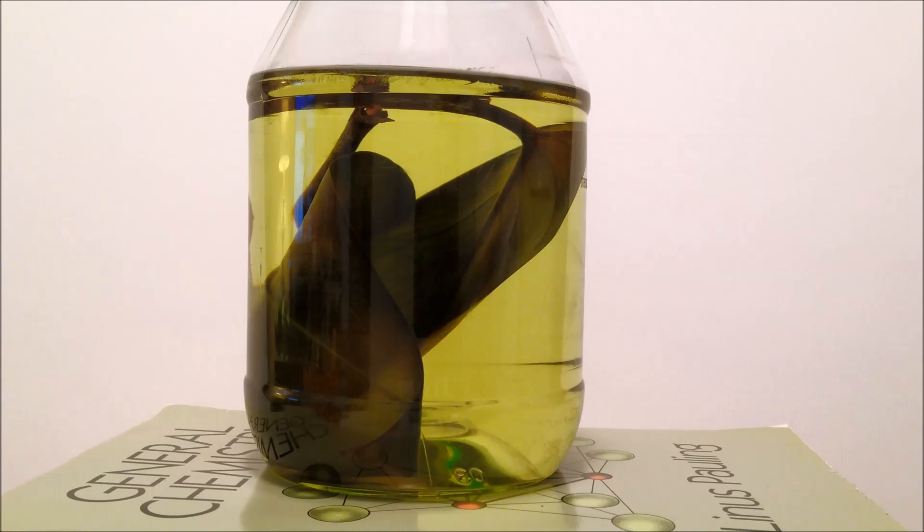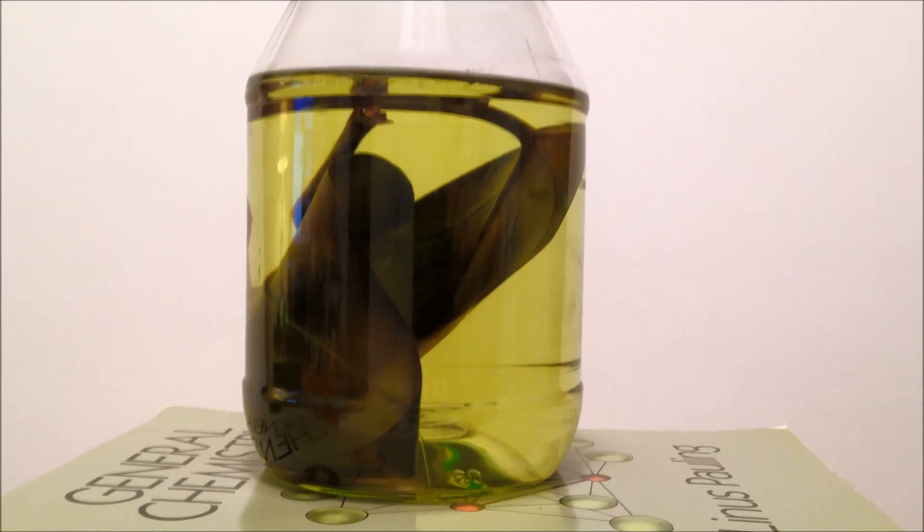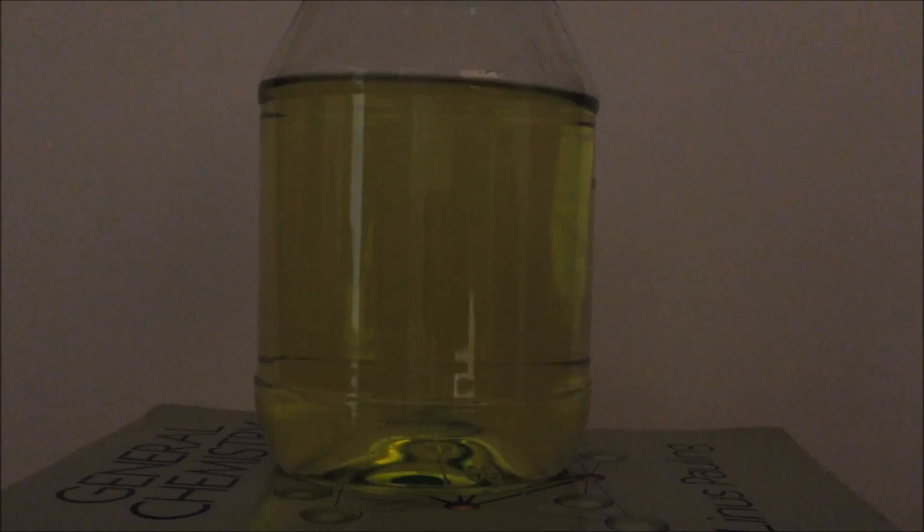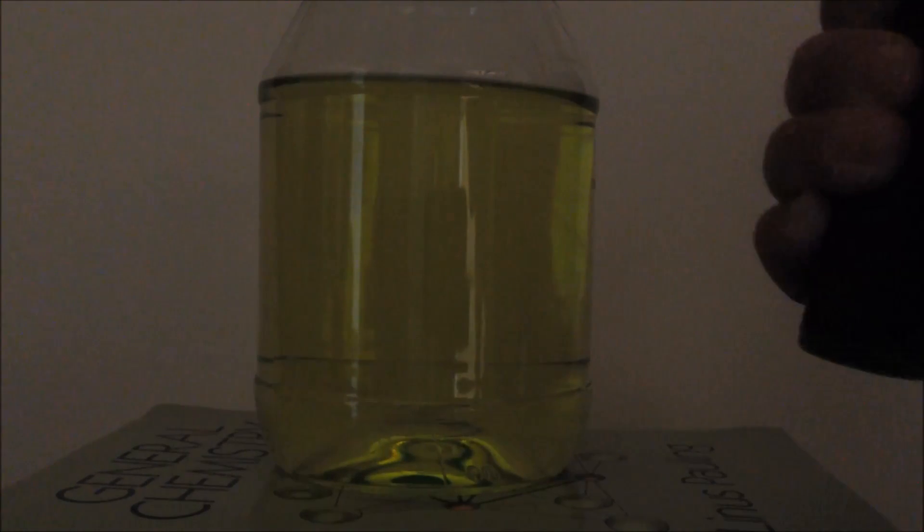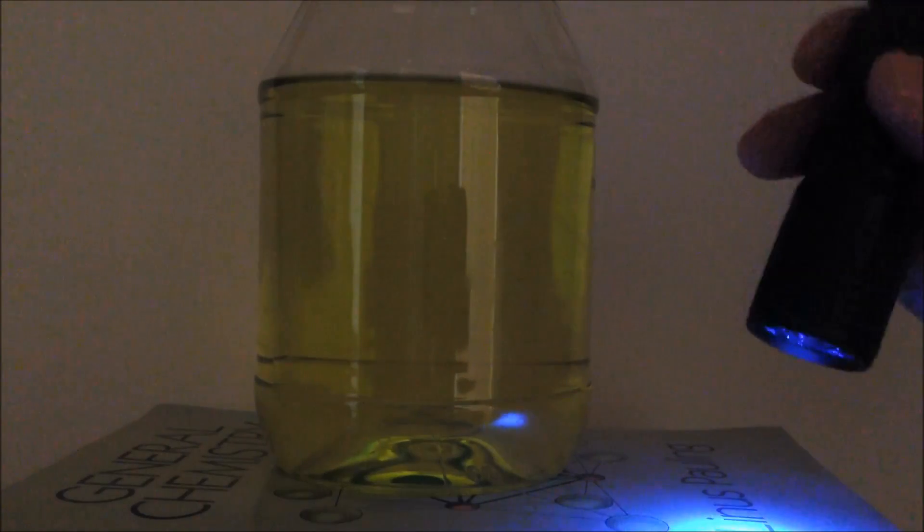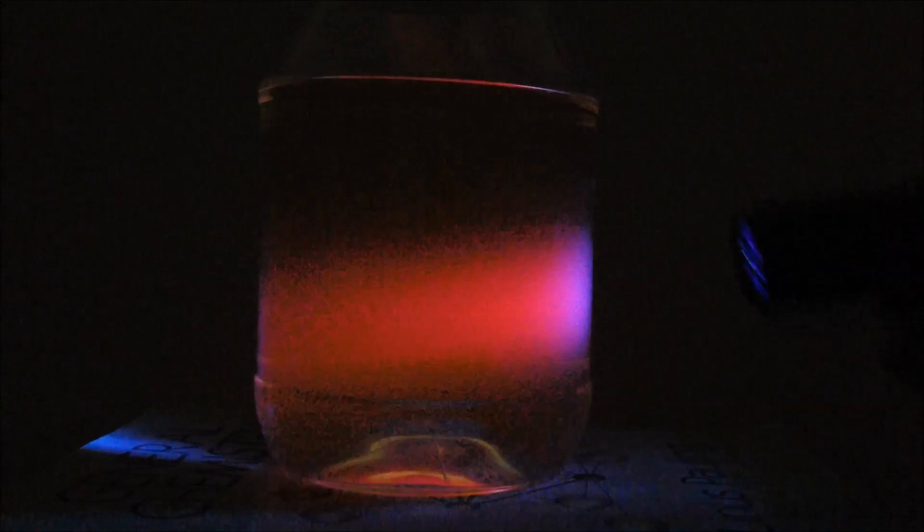I'm going to remove the leaves from the solution and then demonstrate the beautiful red fluorescence of the chlorophyll. Okay, I've removed the leaves, and I'm going to darken the room a little more. I'm going to use this fluorescent black light to demonstrate the fluorescence.